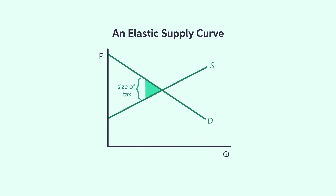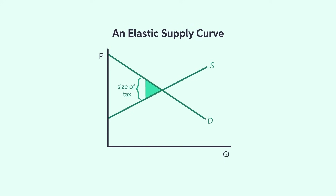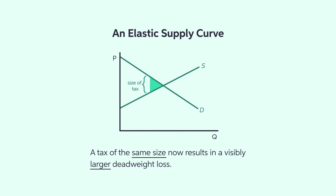In this graph, the demand curve and the size of the tax are identical to the last figure. The supply curve, however, is now flatter to represent an elastic supply. A tax of the same size now results in a visibly larger deadweight loss.